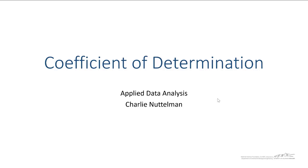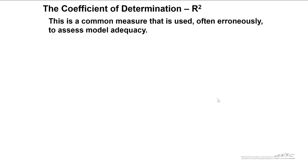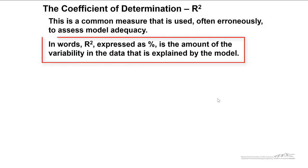R squared typically has been used to evaluate the adequacy of a model. So the coefficient of determination, R squared, is a common measure that is used often erroneously to assess model adequacy. In words, R squared is the amount of the variability in the data that is explained by your regression model.